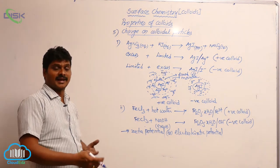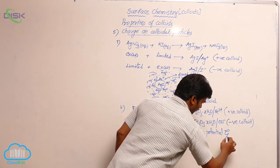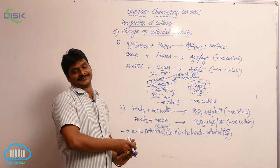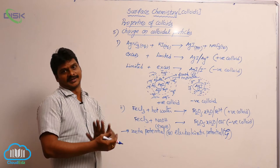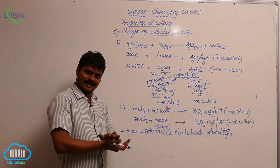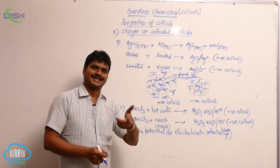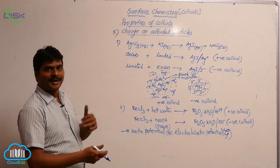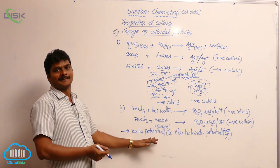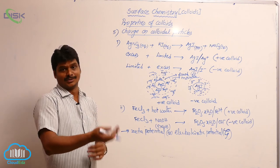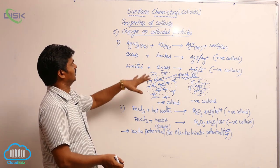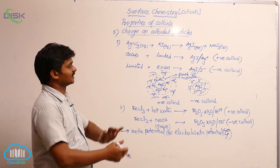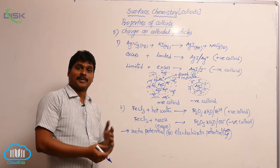That potential is called zeta potential or electrokinetic potential. It is defined as the potential developed between the fixed and mobile layers of a colloidal solution. It may have a negative or positive value, but this zeta potential is responsible for the stability of a colloidal solution. Charges on colloidal particles can be proved by some experiments. This completes the discussion on charge on colloidal particles.